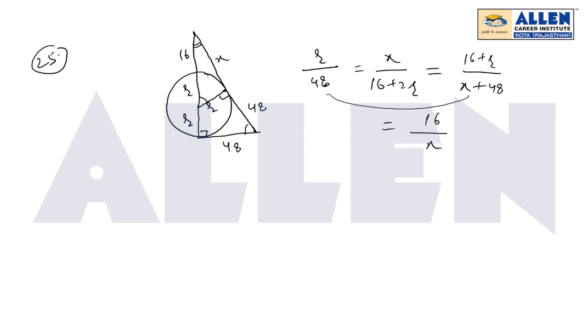Now from the first and this fourth expression we will find relation between R and X, which means we can find X in terms of R, that is 16 into 48 by R.